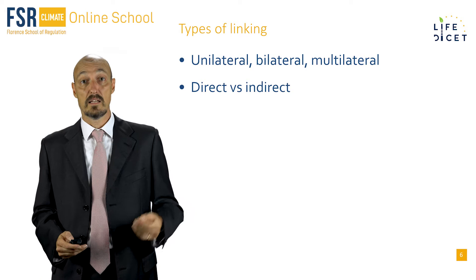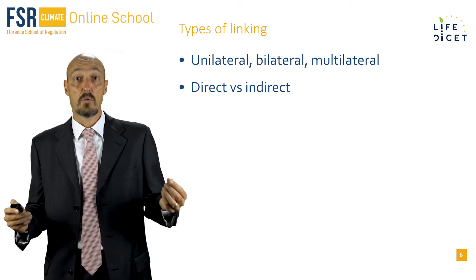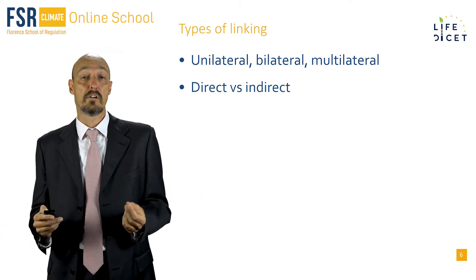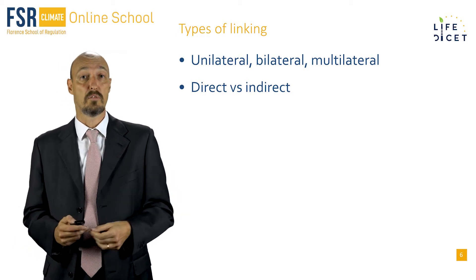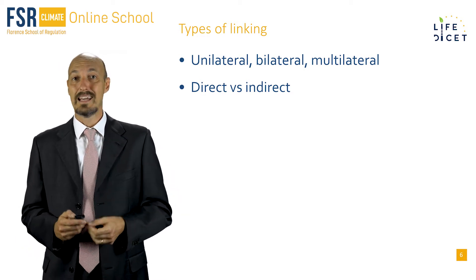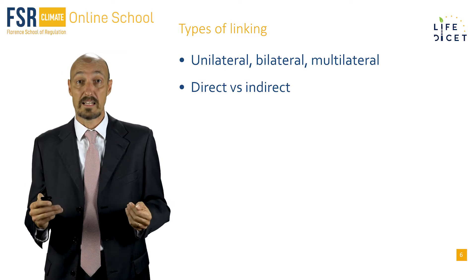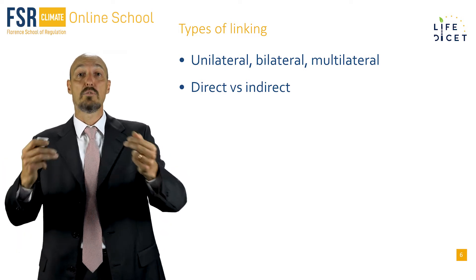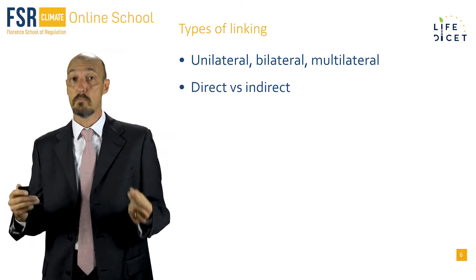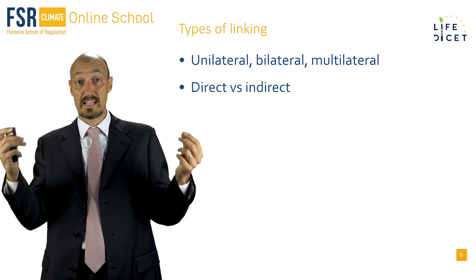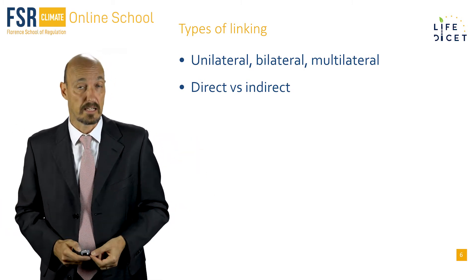Moreover, linking can be direct or indirect. Direct, when the two partners recognize each other's allowances for compliance. Indirect, where they are not linked directly, but each of them is linked to the same third party. So A with C, B with C, and then as a consequence A and B are indirectly linked.